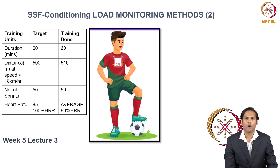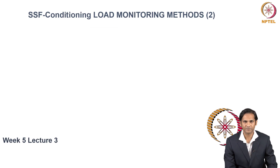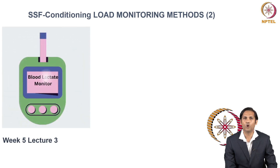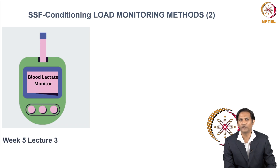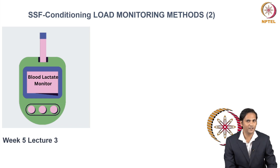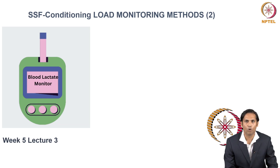These are multiple inputs that need to be monitored, making it a complex method to monitor the load. For that purpose, a GPS system should be used whenever you are undergoing conditioning training. Apart from GPS, you also need to use a blood lactate monitor, because ultimately conditioning is the ability to improve your energy system to sustain the sporting activity. One key goal is improving your anaerobic energy system, which demands monitoring the blood lactate threshold.